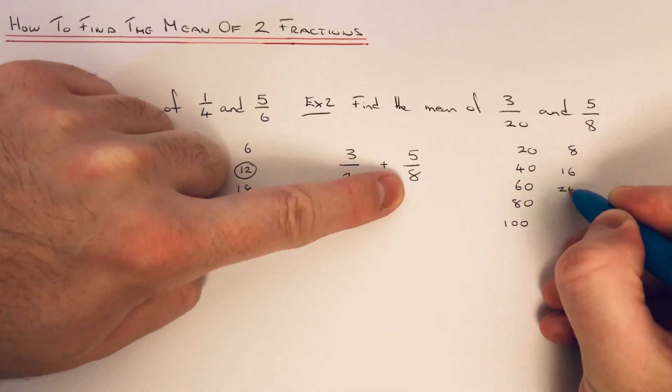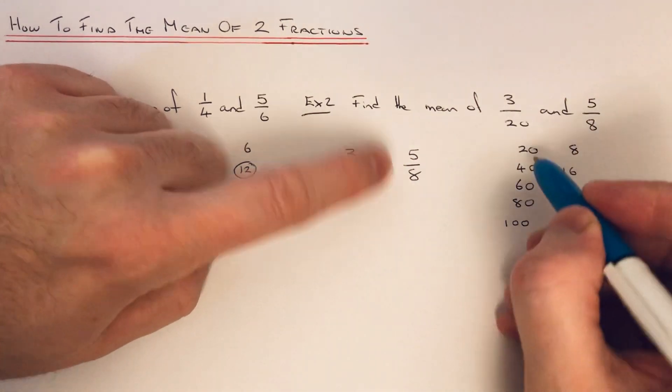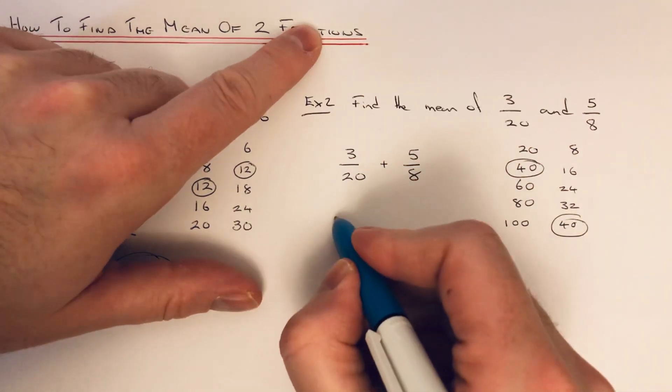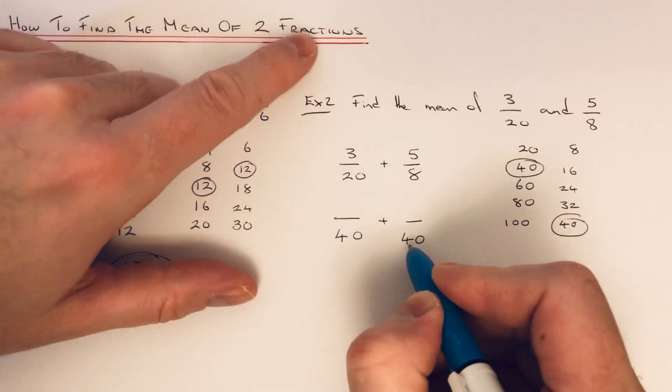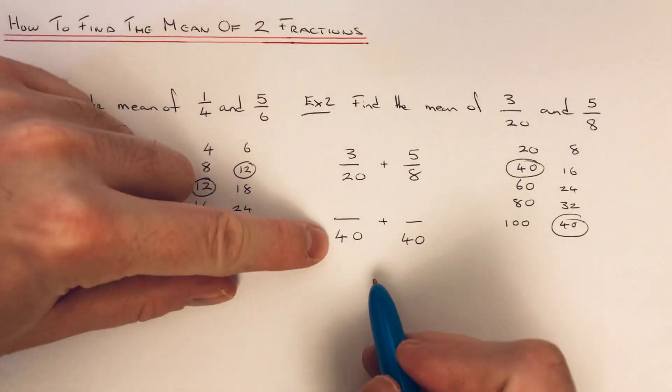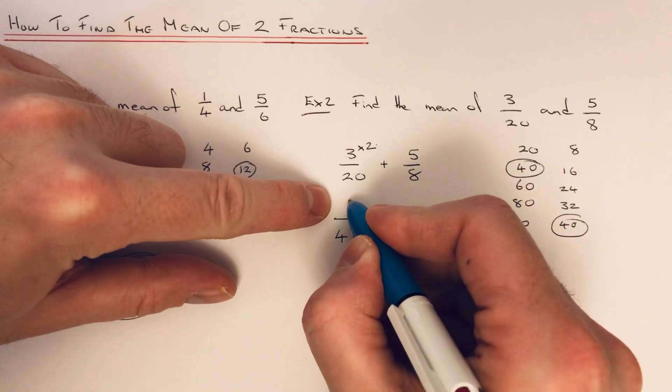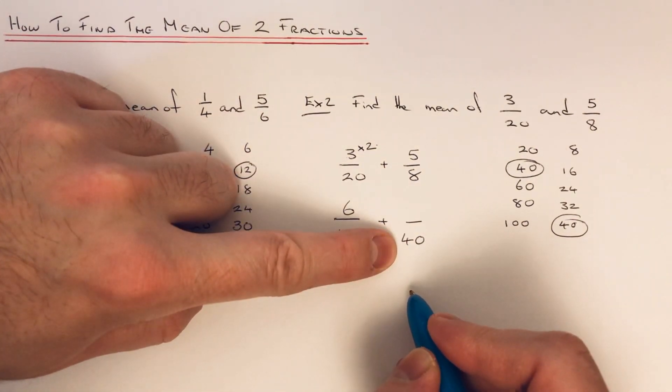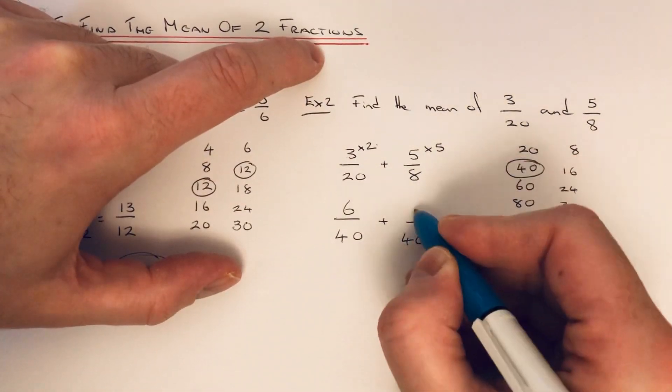So as you can see, 40 is a multiple of 20 and 8, so this is the number to put on the bottom of both fractions. So 20 goes into 40 two times, so times this top number by 2, which is 6. 8 goes into 40 five times, so times that number there by 5. 5 times 5 is 25.